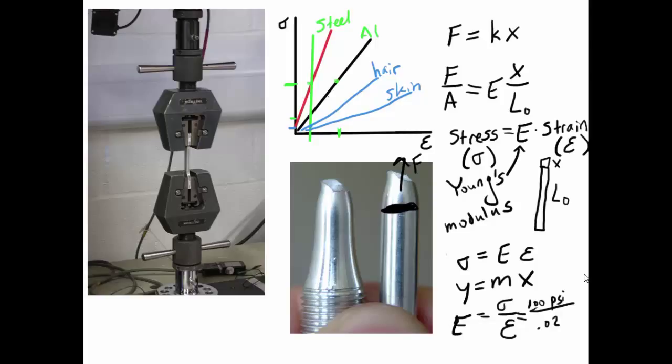So here are some realistic numbers. Young's modulus for a piece of steel. Typically about 30 million PSI. If you look at this equation right here, if you set epsilon equal to 1, which corresponds to 100% strain, the thing is increasing its length 100%. That means it's doubling in length. Then E equals sigma over 1. If E is 30 million PSI, then sigma would also be 30 million PSI.